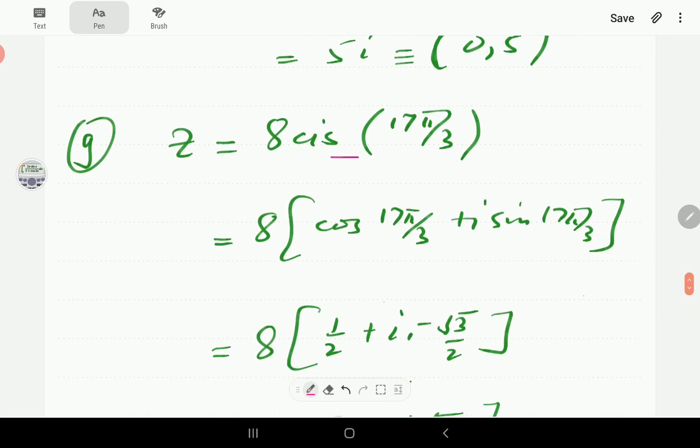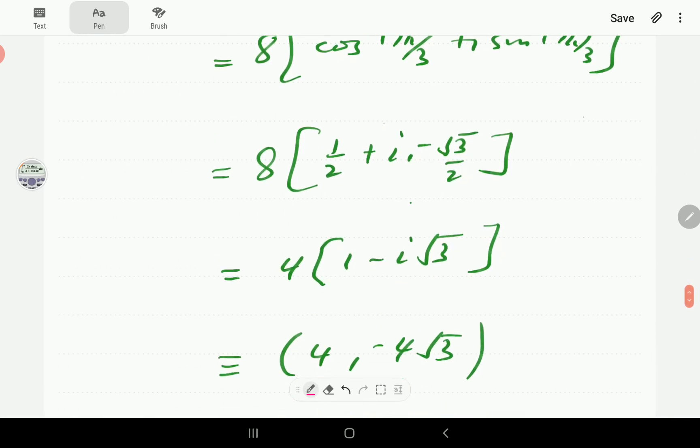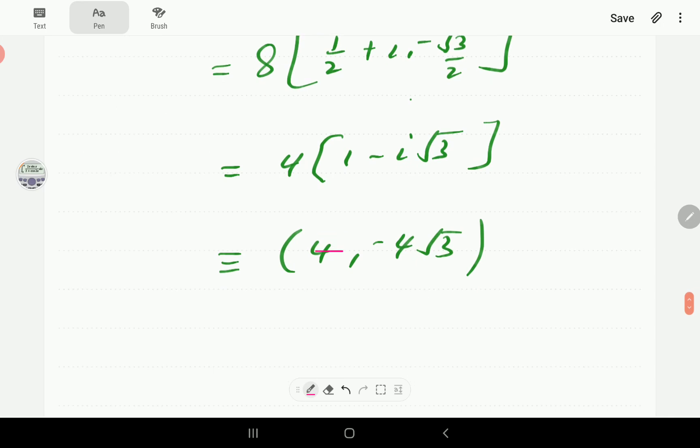Part (g): eight cis 17 pi on three. Cosine 17 pi on three is one half, sine 17 pi on three is negative root three on two. So that's going to be our x and that is our y. All right, thank you.